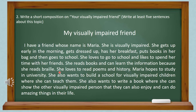She loves to read poems and history. Maria hopes to study in university. She also wants to build a school for visually impaired children where she can teach them. She also wants to write a book where she can show other visually impaired persons that they can also enjoy and can do amazing things in their life.